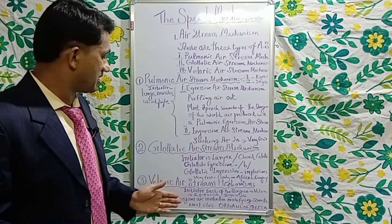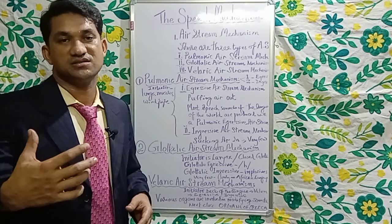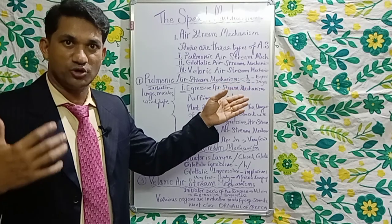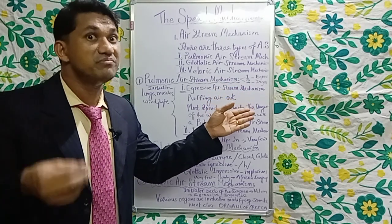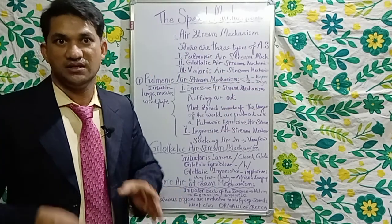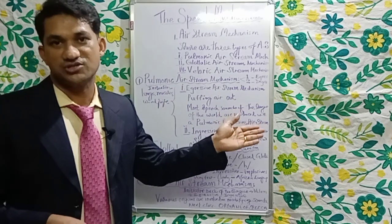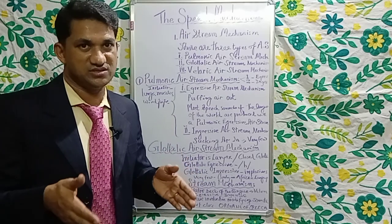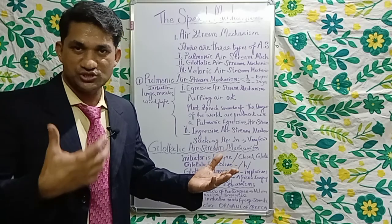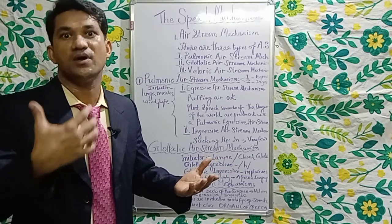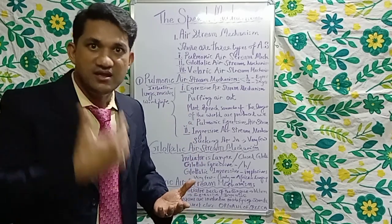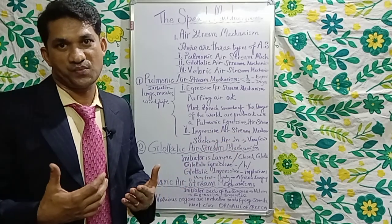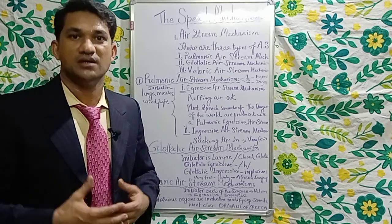We also have the glottalic air stream mechanism and the velaric air stream mechanism, which we shall discuss in the next session. To summarize: we discussed the speech mechanism today. The production of speech sounds is based on the air we breathe, known as the air stream mechanism. There are three types: the pulmonic, glottalic, and velaric air stream mechanisms. In this session we studied the pulmonic air stream mechanism — producing sounds by pushing air out and sucking air in. Next, we will look at the glottalic and velaric air stream mechanisms. Thank you very much for listening.